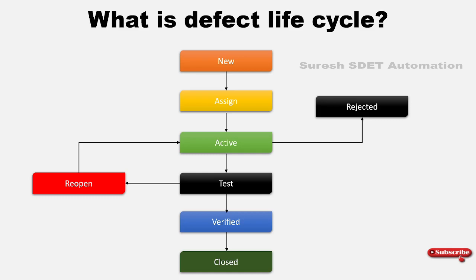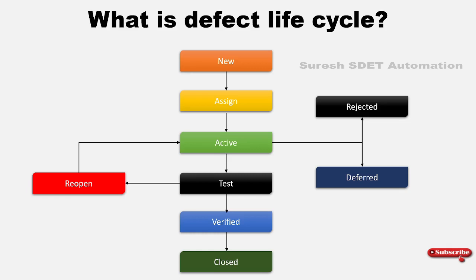There is one more case where the developer wants to fix the defect but not now — they plan to do it in the future. In that case there is a 'Deferred' status. Deferred means that due to time constraints or priority considerations, they move that defect to future releases. In that way, the defect is moved to deferred status.